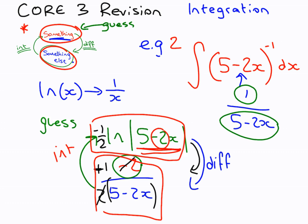So that means that we know how to differentiate this and a.k.a. how to integrate 1 over 5 minus 2x, which is what we started with, 5 minus 2x to power minus 1. So we write our answer, and you cannot forget the plus c.